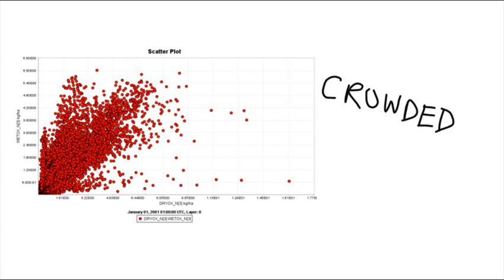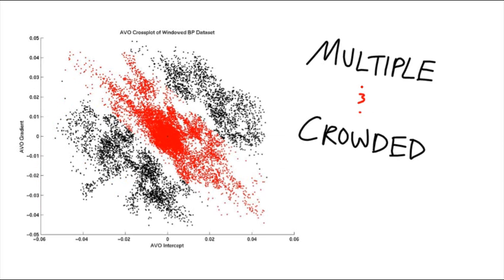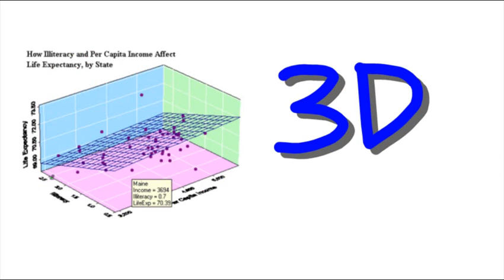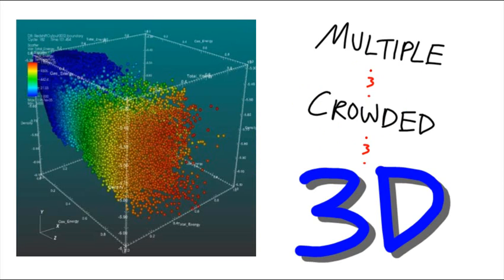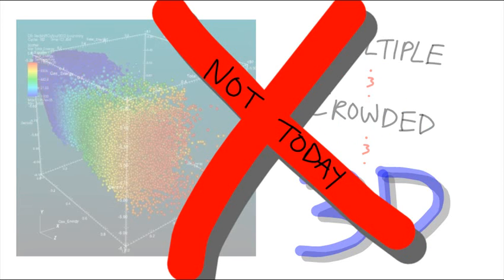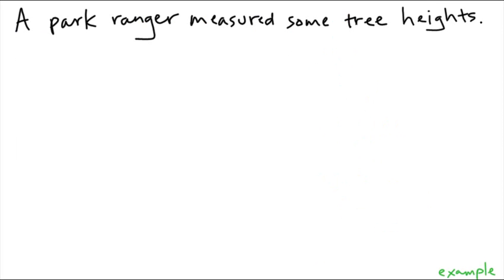There are some scatter plots that are really crowded, others have multiple sets of data and are crowded, some are actually 3D, and of course some are multiple sets and crowded and 3D — but we won't be dealing with those today.